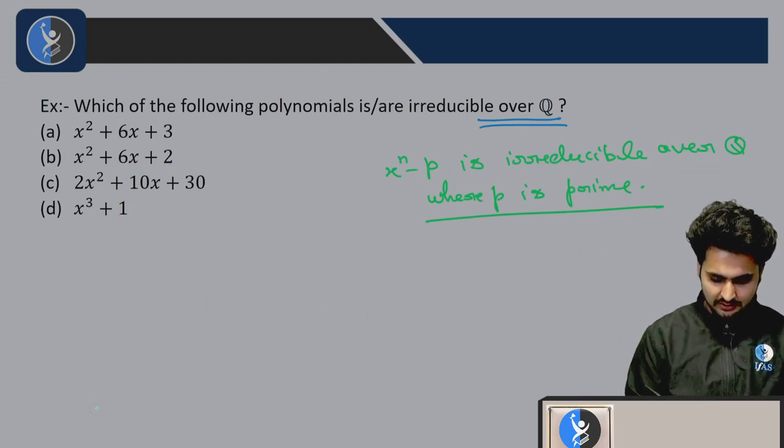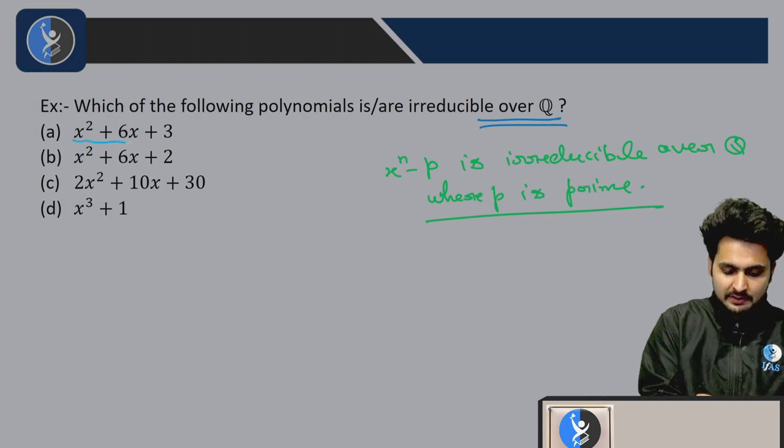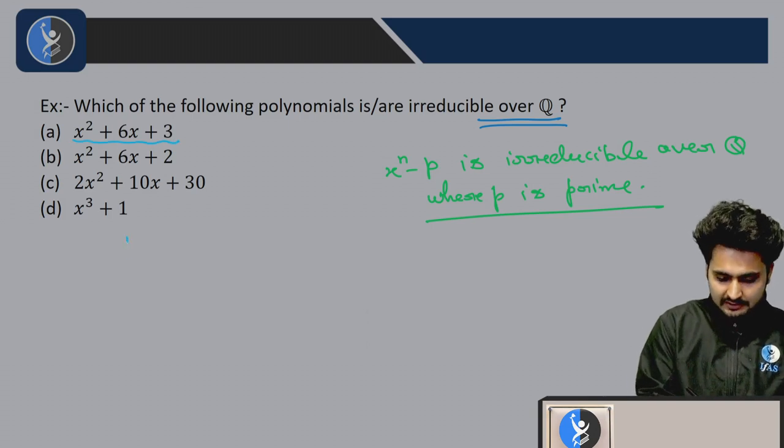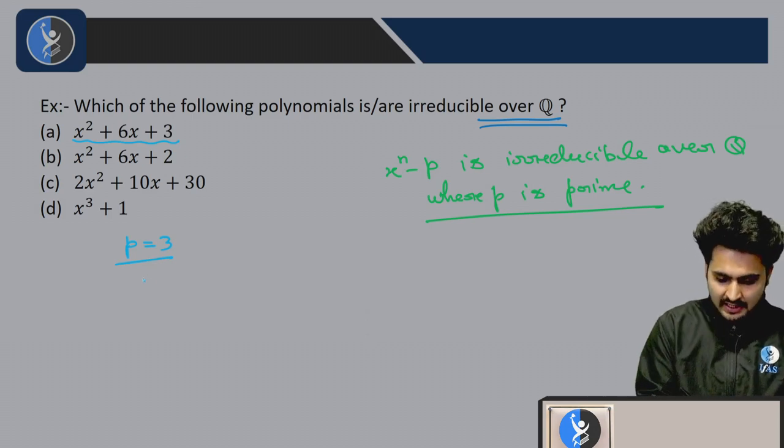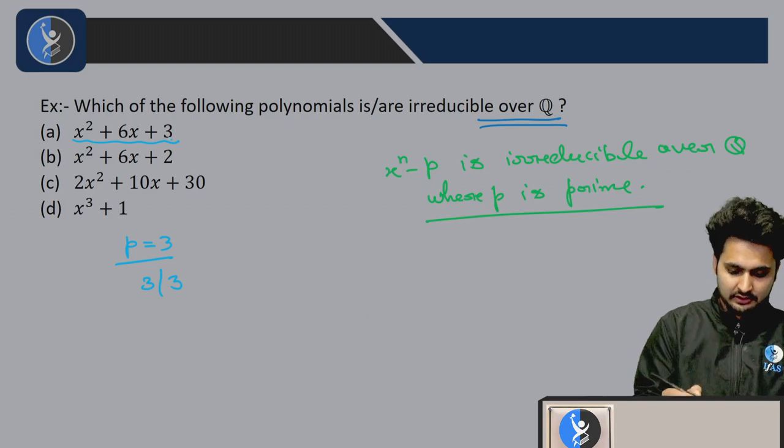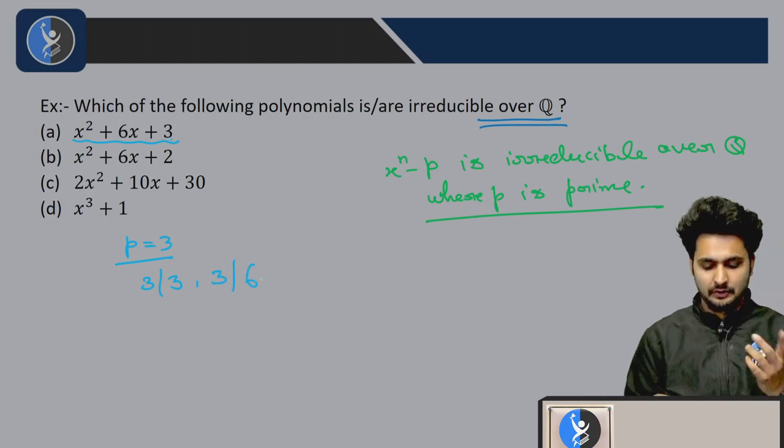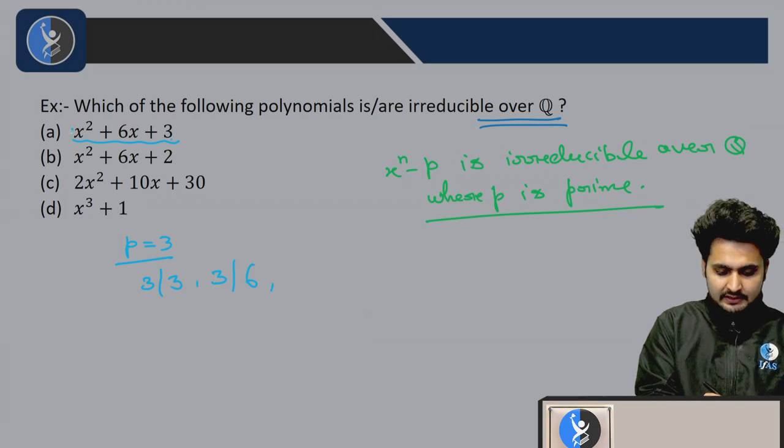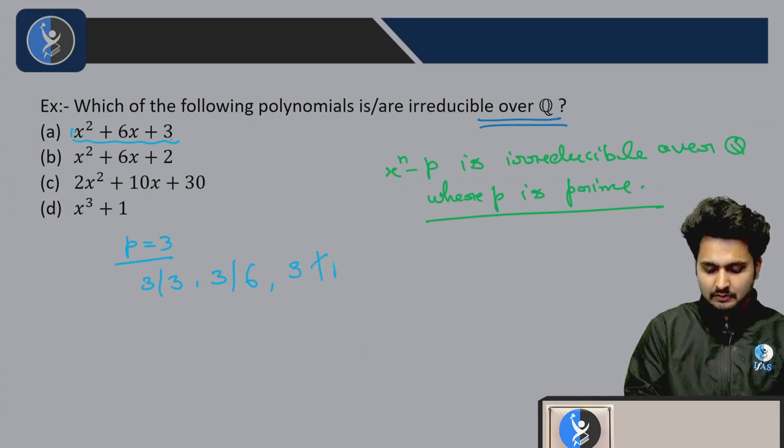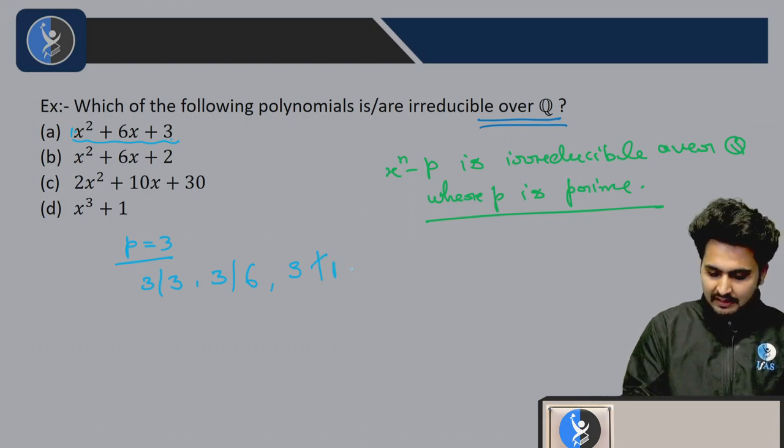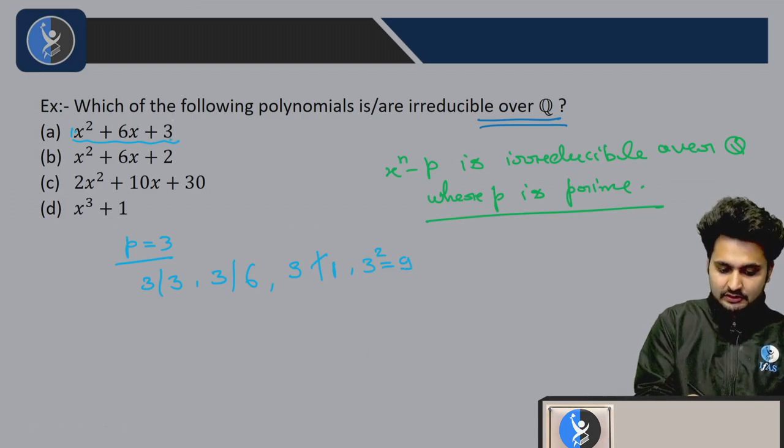Let's see how to use this in the question. x squared plus 6x plus 3. If I let's say p equals 3, 3 divides the constant coefficient, 3 divides 6, but 3 does not divide the highest degree coefficient.